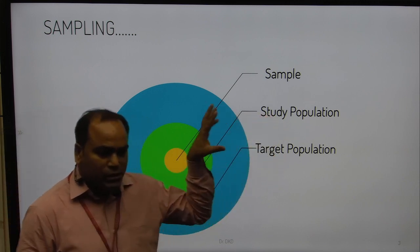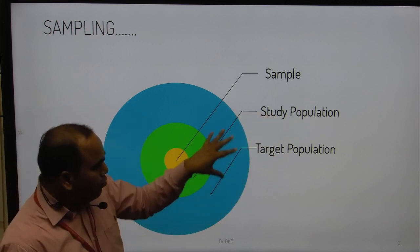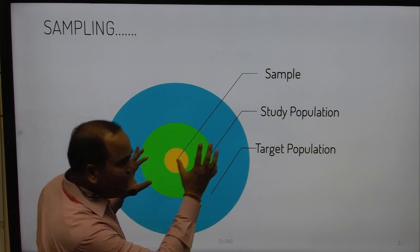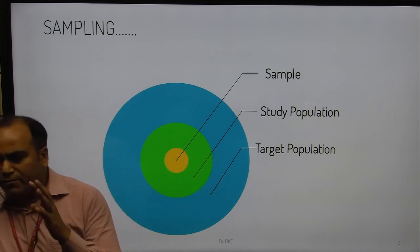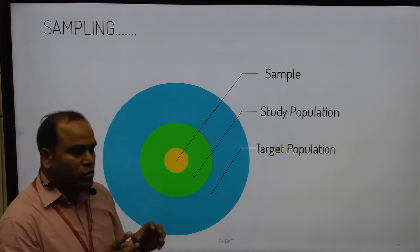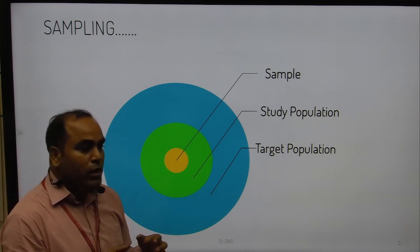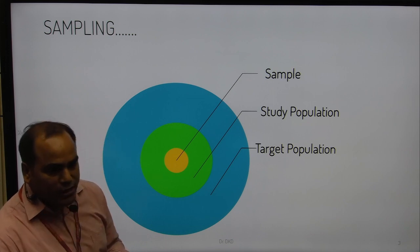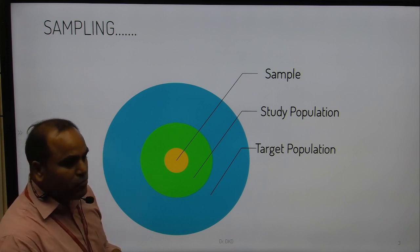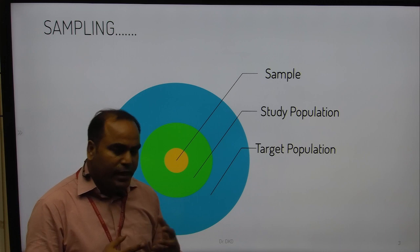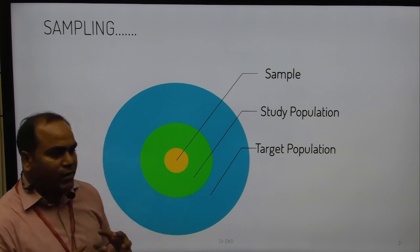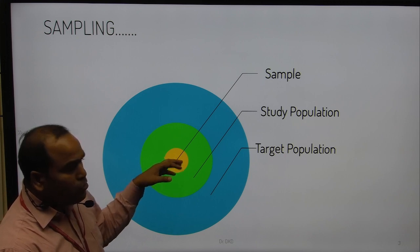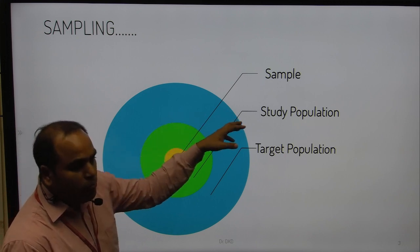Out of the target population, we need to define our study population. Within the target population, we need to understand what kind of study we are going to perform — whether it is a prevalence study or collecting samples for a particular disease. As a researcher, you have to decide what your objective is.